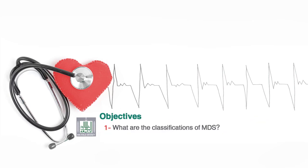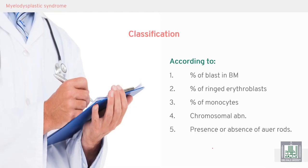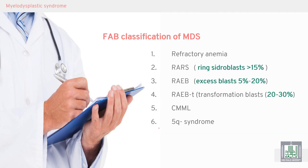MDS can be classified according to percentage of blasts in the bone marrow, percentage of ringed sideroblasts in the bone marrow, percentage of monocytes in the peripheral blood and marrow, and chromosome abnormality — presence or absence. This leads us to the FAB classification of MDS.